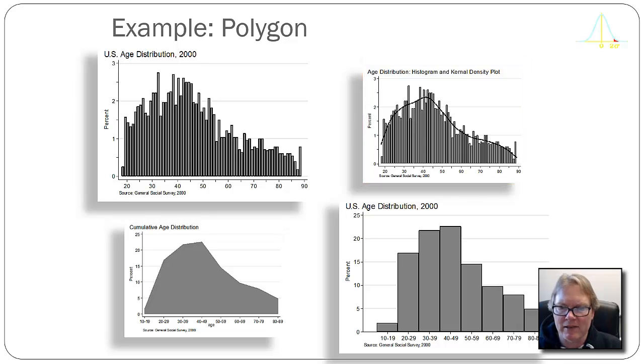And the kernel density plot takes little pieces of the data, kind of a smaller group of ages, and calculates some kind of distribution. And then it moves the window of the ages a little bit to the older ages, but they still overlap. And it keeps calculating little bits and pieces. So think of it as averaging out the highs and lows and the peaks and valleys.